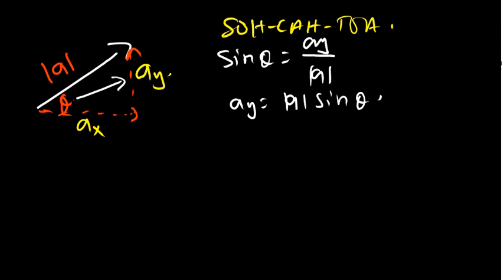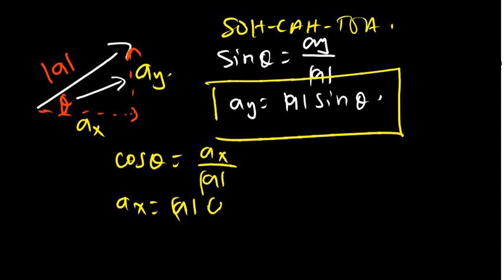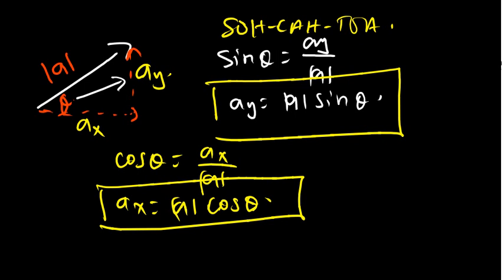If I want to find AY, I cross-multiply to get AY equals vector A times sin theta. Whenever you want to resolve any vector into the Y component, you get that vector times sin of the angle. For the X component, cos theta equals adjacent over hypotenuse, so AX equals vector A times cos theta. So to resolve into the X component, get that vector times cos of the angle.